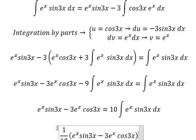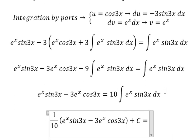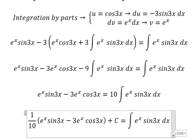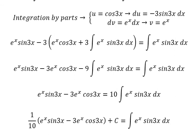We get 1 over 10 times (e to the power of x sin3x minus 3e to the power of x cos3x) plus C. That's the end, thank you for watching.